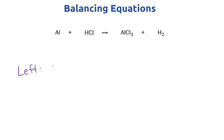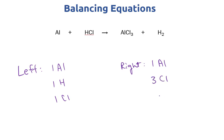The left has one aluminum, one hydrogen, and one chlorine. The right has one aluminum, three chlorines, and two hydrogens. The aluminums are currently balanced, so we can leave that. I tend to save hydrogen and oxygen for last since they can be a bit tricky, so I'll start with chlorine. There are three chlorines on the right and one on the left, so I'll put three before HCl.